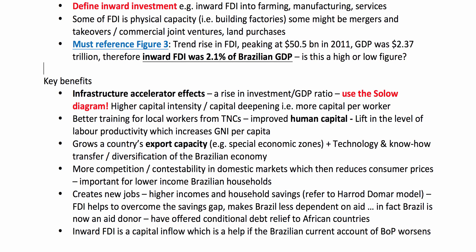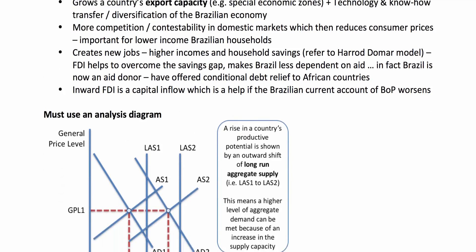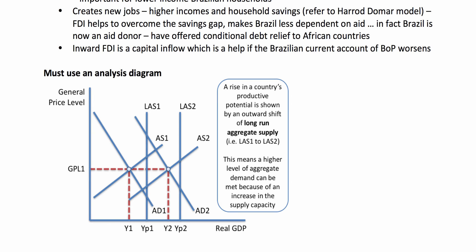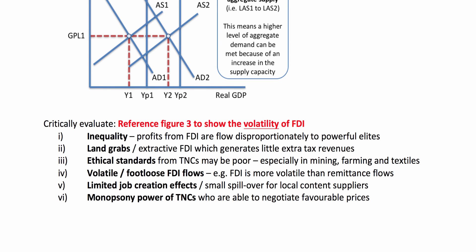Build your analysis — looking for many points. The impact of FDI on infrastructure: A2 macro students will probably want to use the Solow diagram to show a rise in the capital stock and an increase in capital per worker. Possible benefits of FDI include better training for local workers, improving productivity from better human capital, growing a country's export capacity, more competition in domestic markets, creating jobs and incomes, and helping to overcome the savings gap. A good analysis diagram to use would be AD/AS, showing how investment is triple-powered — it creates extra demand, but it also affects aggregate supply both in the short and the long term. Refer to figure three and extract one at least once.